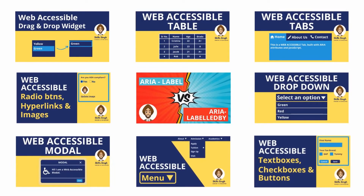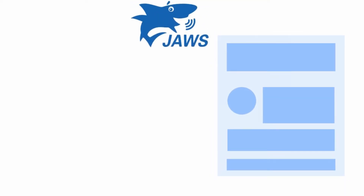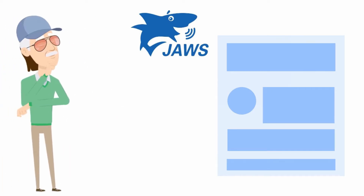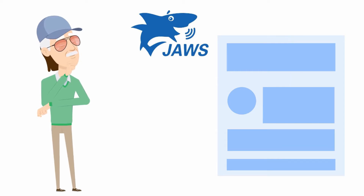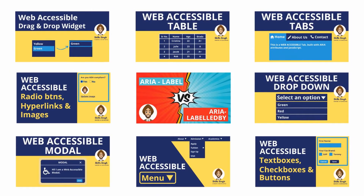So far on this channel we have created web accessible HTML elements using HTML5 semantics, ARIA attributes, and JavaScript. Now it's high time that we run JAWS, a screen reader, to test how these elements behave and discover if they are really accessible to non-sighted users. This should help you understand what non-sighted users hear when interacting with your web application.